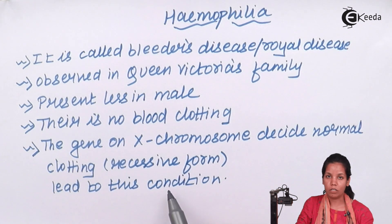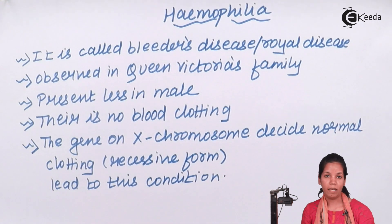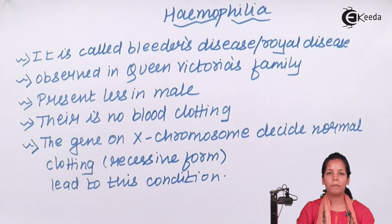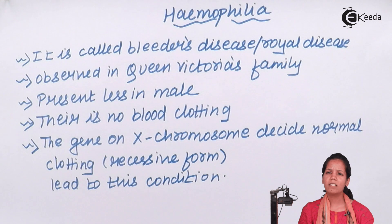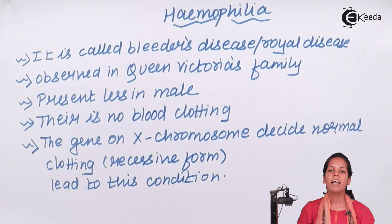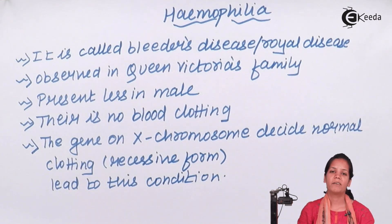This gives you either Type A hemophilia or Type 2 hemophilia. In this part of the chapter we came across hemophilia and how it is termed as bleeders disease. I hope students are very clear with this concept. Thank you.